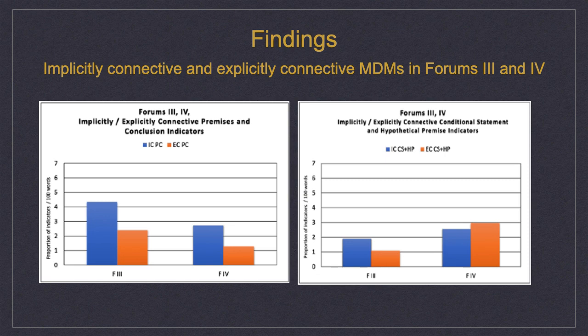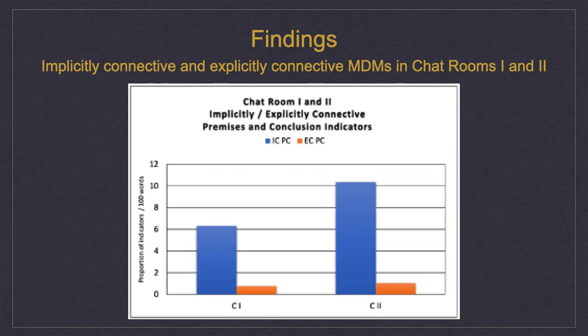Since there is limited textual real estate, so to speak, the conditional statement markers increase at the expense of the garden variety premise and conclusion indicators. In the chat rooms, where the discourse tended to be more conversational, there were fewer gains in the use of explicit markers, and students tended to revert to their previous use of implicit meta discourse markers.